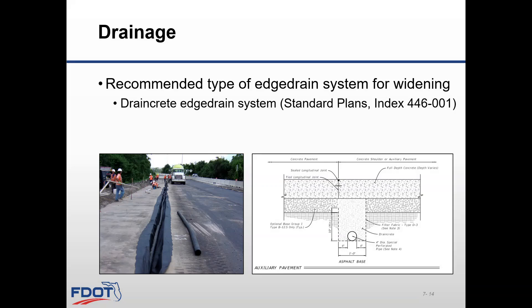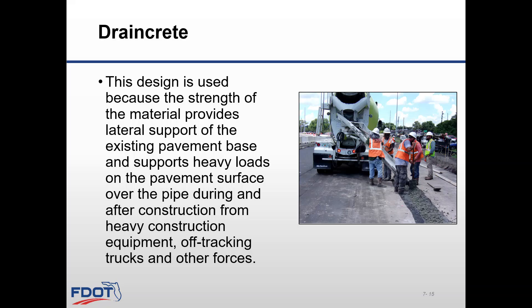The recommended type of edge drain system for widening is the DrainCrete Edge Drain System, Standard Plans Index 446-001. As you can see in the picture, they are installing the filter fabric under the pipe before placing the DrainCrete. DrainCrete is used because the strength of the material provides lateral support of the existing pavement base and supports heavy loads on the pavement surface over the pipe during and after construction from heavy construction equipment, off-tracking trucks, and other forces.